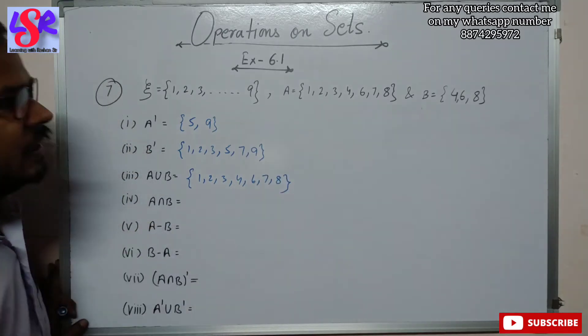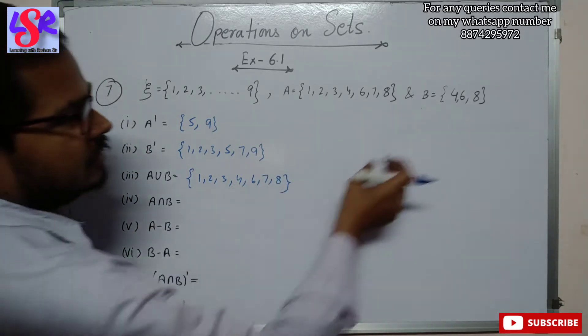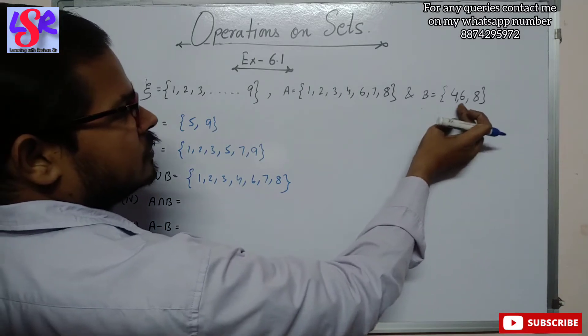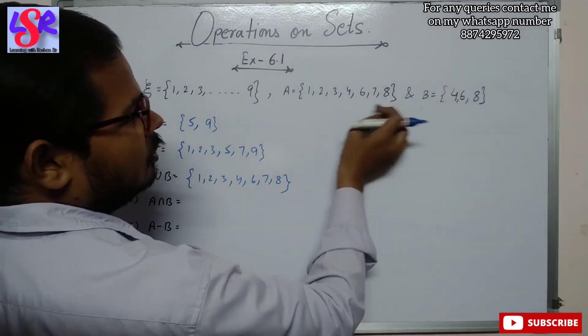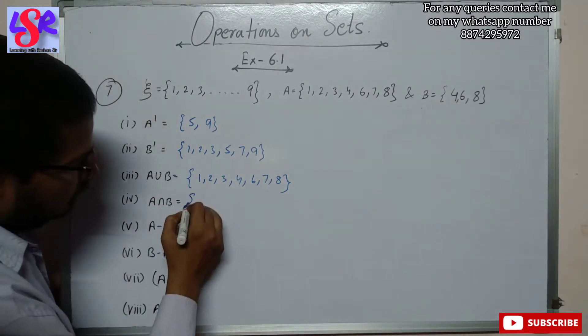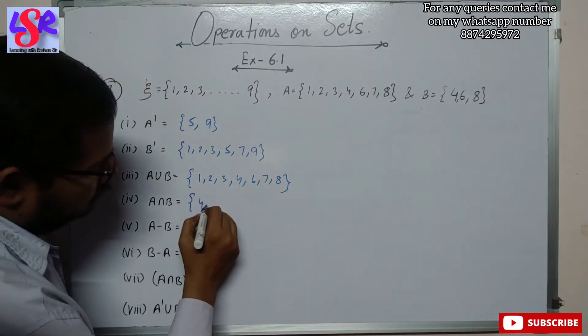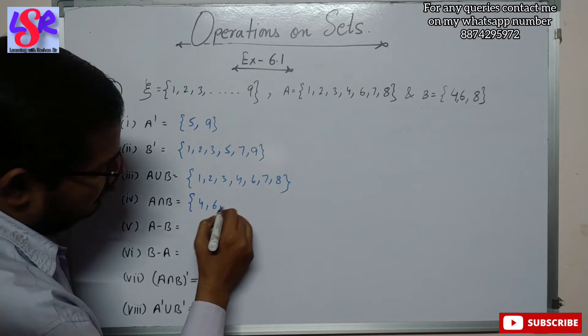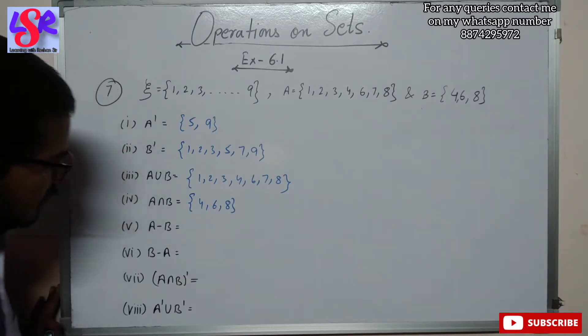Then we are having the intersection. Since 4, 6 and 8 are common in both sets, A intersection B equals {4, 6, 8}.